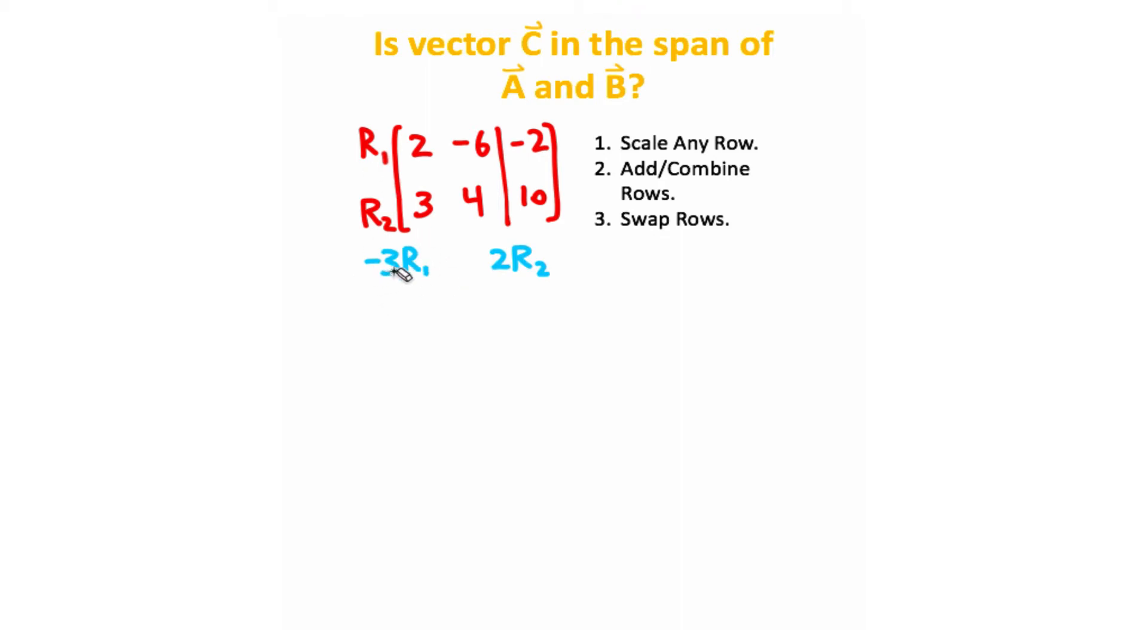Row one I'm going to scale by negative three, and row two I'm going to scale by positive two. When I do this, I should get this matrix right here.